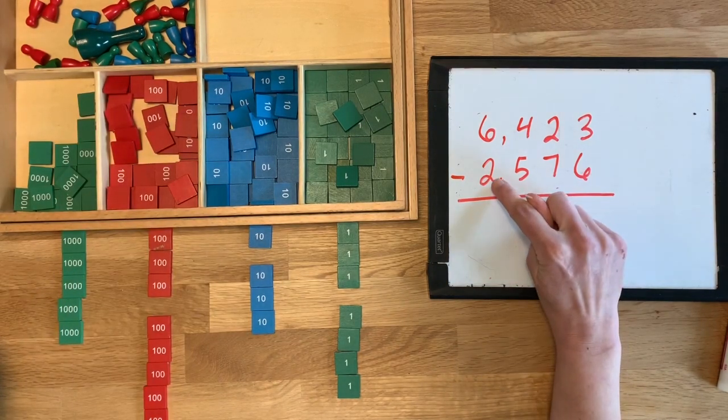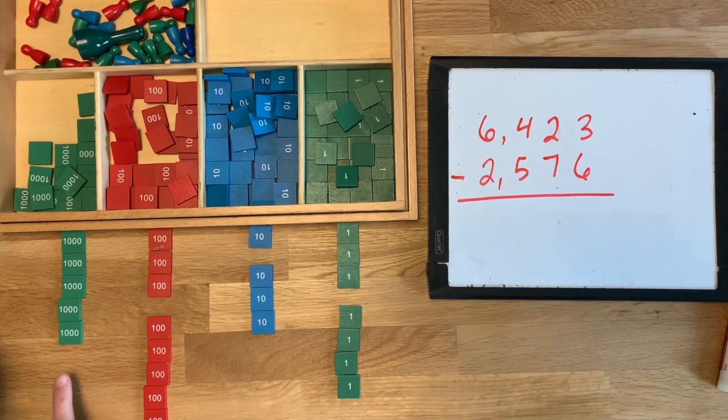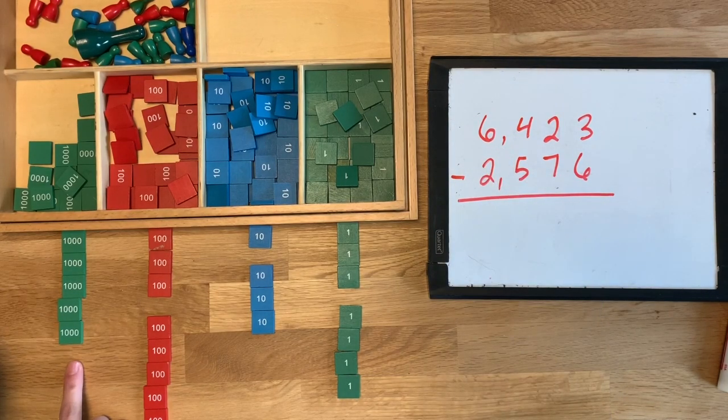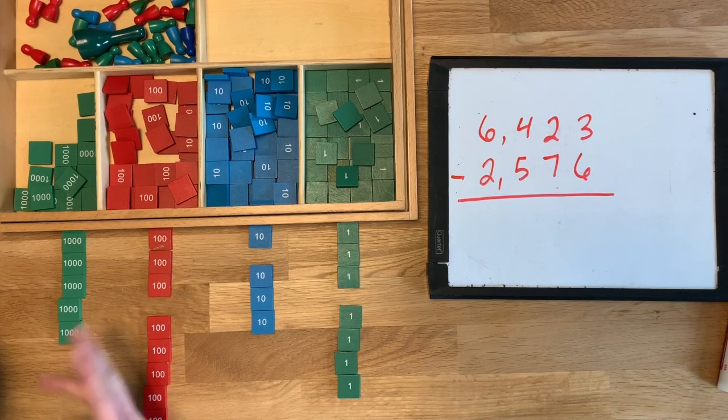We need to take two away from, it's not six anymore, it's five because we borrowed. Can we do that? Yeah. There's enough. I don't have to borrow. One, two. I can take two away.